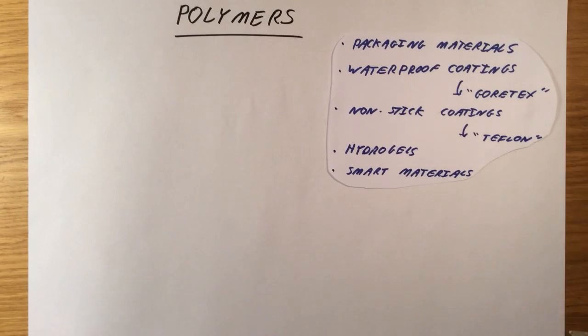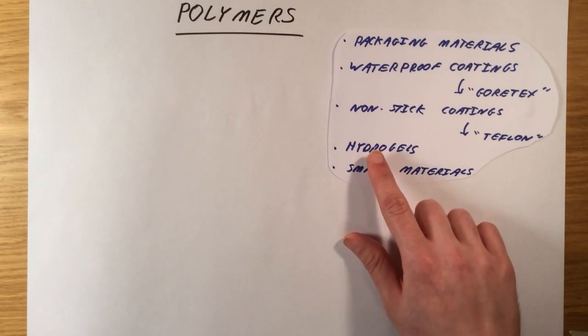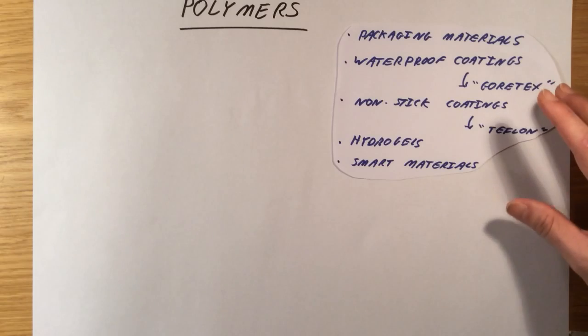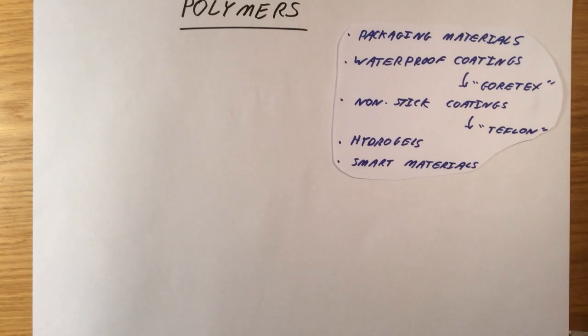Then you have smart materials, things like hydrogels which can be very absorbent materials, and other forms of smart materials like shape memory plastics. Just a very brief list, but there are absolutely thousands of uses.